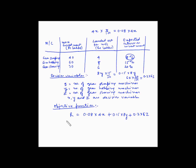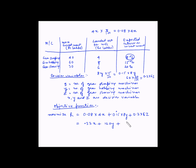The objective is to maximize R. Simplifying: 0.08 × 4 = 0.32, so 0.32x; 0.15 × 8 = 1.2, so 1.2y; and 0.2 × 6 = 1.2, so 1.2z. Therefore, maximize R = 0.32x + 1.2y + 1.2z.